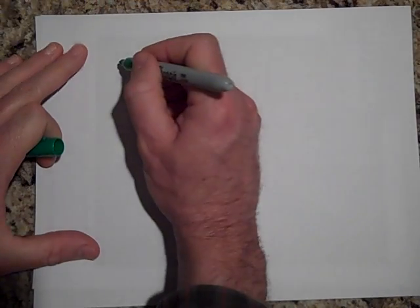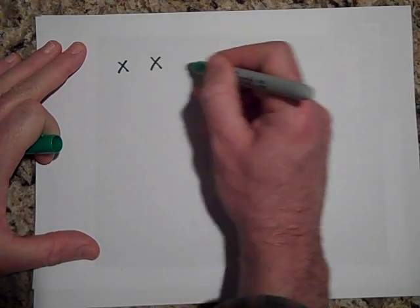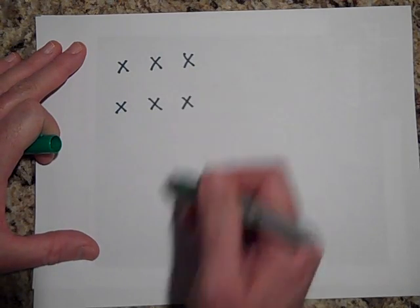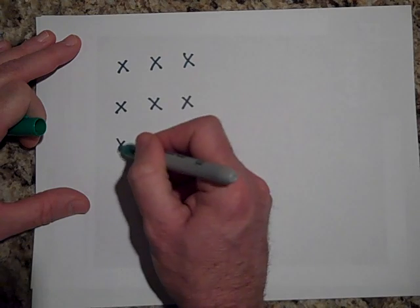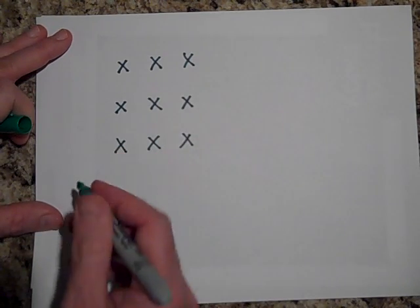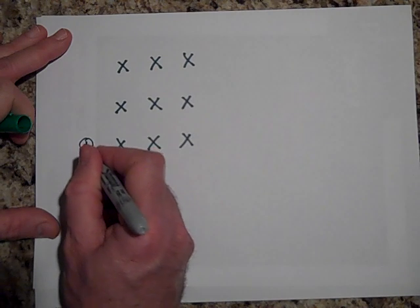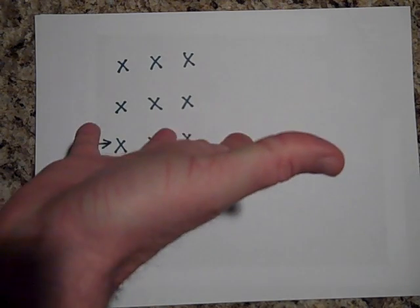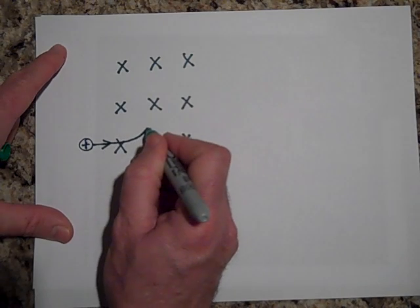So if we do have a field this way, by this time I'm hoping that you know that that's a field going into the paper. And here comes a positive charge. Then the first thing it's going to feel when it comes in here is it's going to feel a force up. So that's going to cause it to go up.